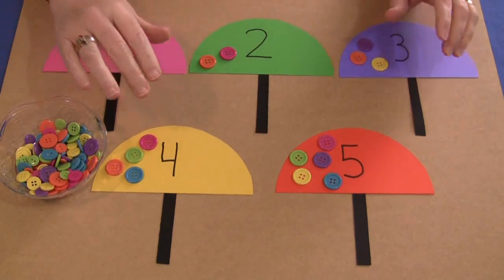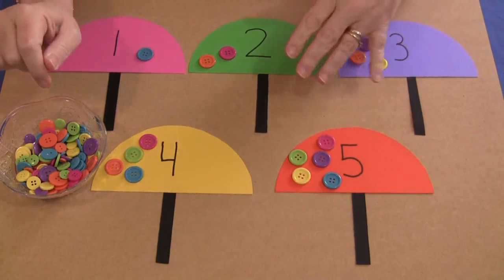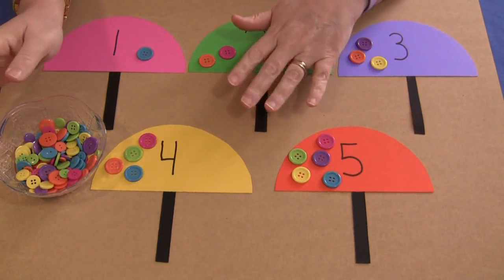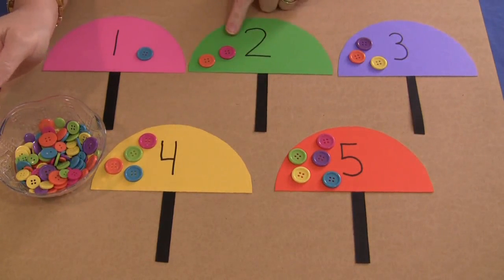And if you don't have a larger workspace, you can just set one umbrella out and the child would come and work on the umbrella that's there. Put the same number of buttons or whatever object you're using to count with on there.